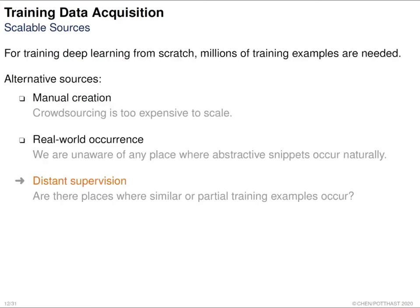If we want to train a deep learning model from scratch, we usually need millions of training examples. We could hire experts to generate them or collect naturally occurring examples, but in our case that is too expensive and real-world examples couldn't be found. The alternative is distant supervision — finding resources sufficiently similar to abstractive snippets that we can use to train our abstractive snippet generator.